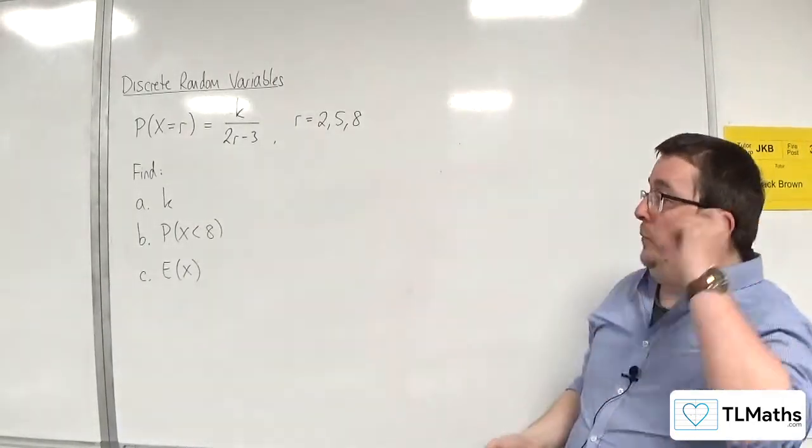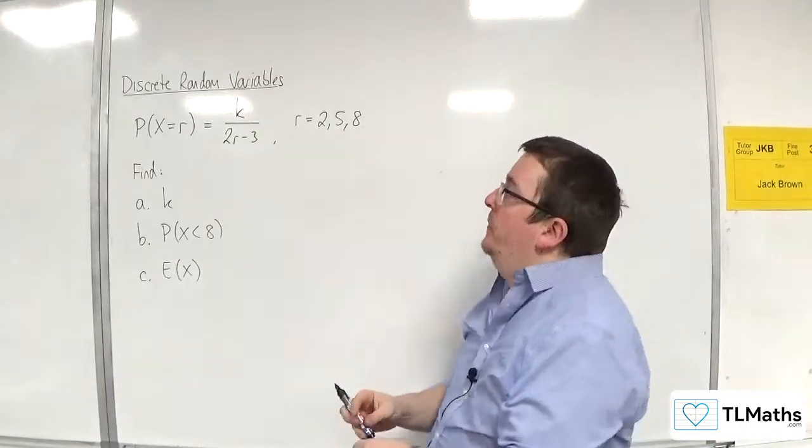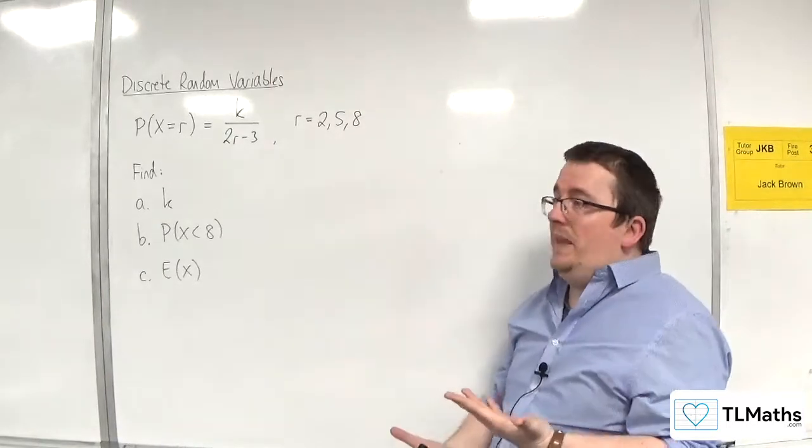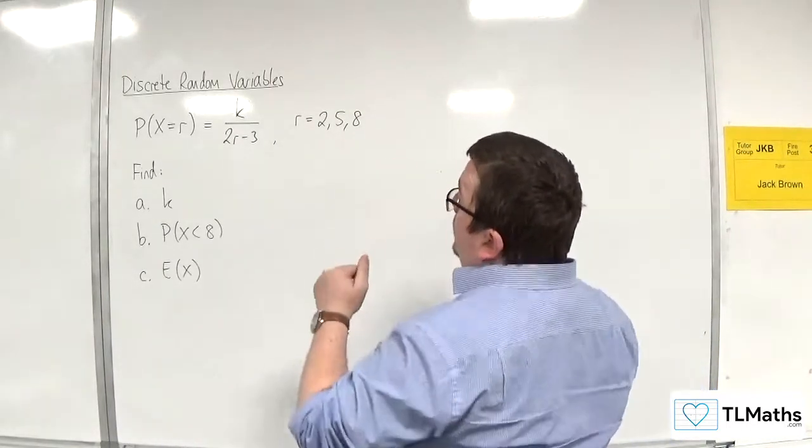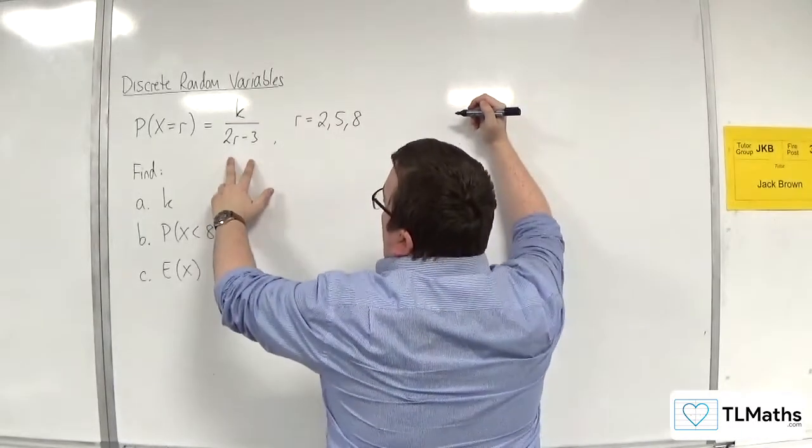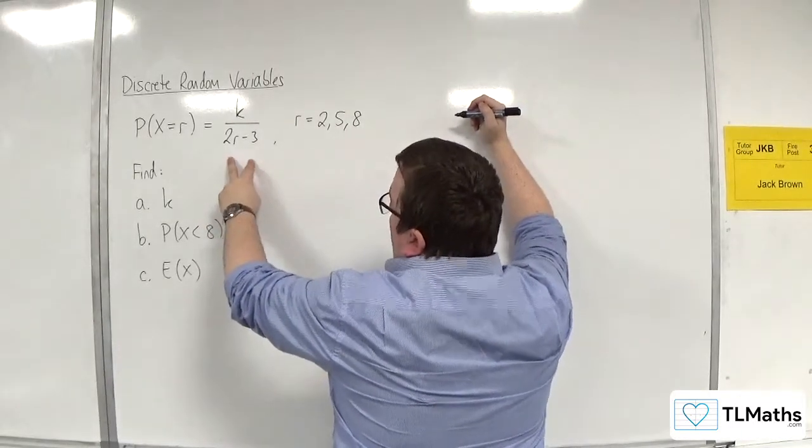So the first thing that we need to do is work out the value of k. We know that the sum of the probabilities has got to be equal to 1. So that means if I substitute in 2, 5, 8 into this for the values of r and add them all together,